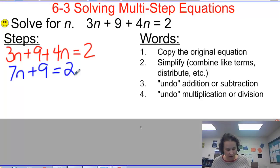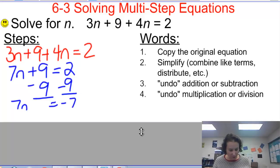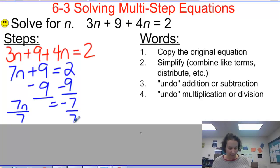Now I'm going to undo my addition or subtraction. In this case, I'm undoing the addition by subtracting 9 from both sides, which gives me 7n equals negative 7. Then I have to write really small here and divide both sides by 7 because now I am undoing the multiplication. The 7's cancel, and I get n equals negative 1. Once you've done that second step of simplifying, you should be left with just a two-step equation to solve.